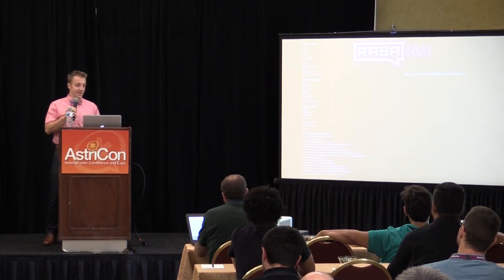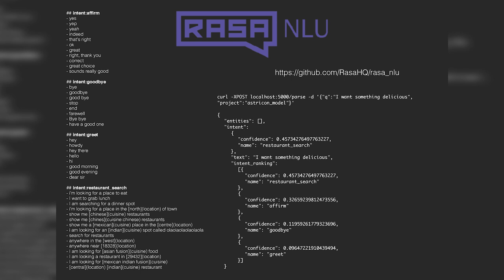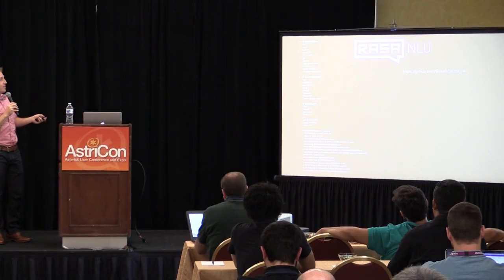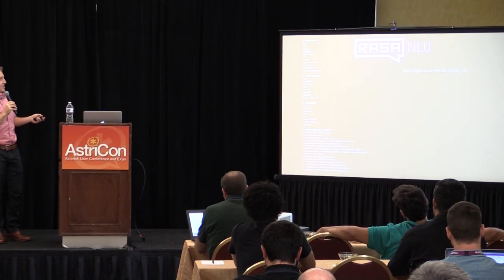Another good one is Rasa. Rasa NLU is basically SpaCy with a bunch of other stuff tacked onto it — another open source project. Here's a training set, which is a good example of an intent structure. We have things that basically mean 'affirm' — yep, yes, indeed, alright, great, cool.